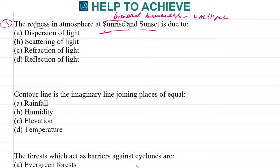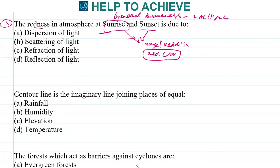Starting with the first question: the redness in the atmosphere at sunrise and sunset. Early in the morning during sunrise and sunset we see the clouds are somewhat orange or reddish in color. This basically happens because of red color being more visible, due to the phenomenon of scattering of light. Red color scatters the least, so most of the color that reaches our eye is red.